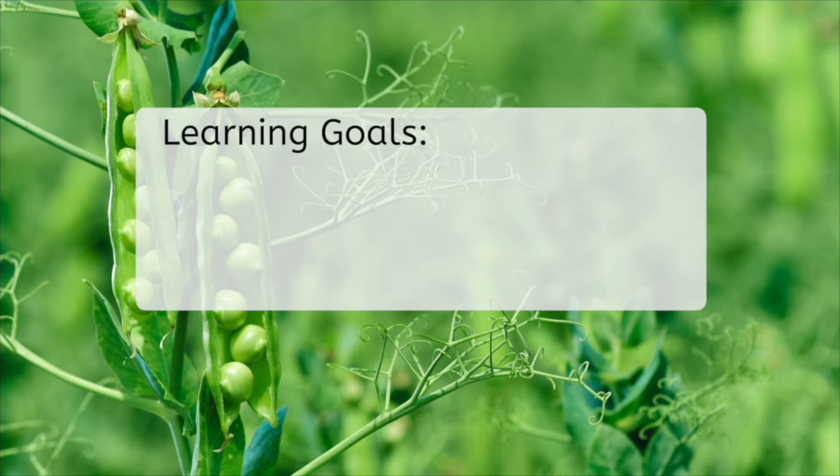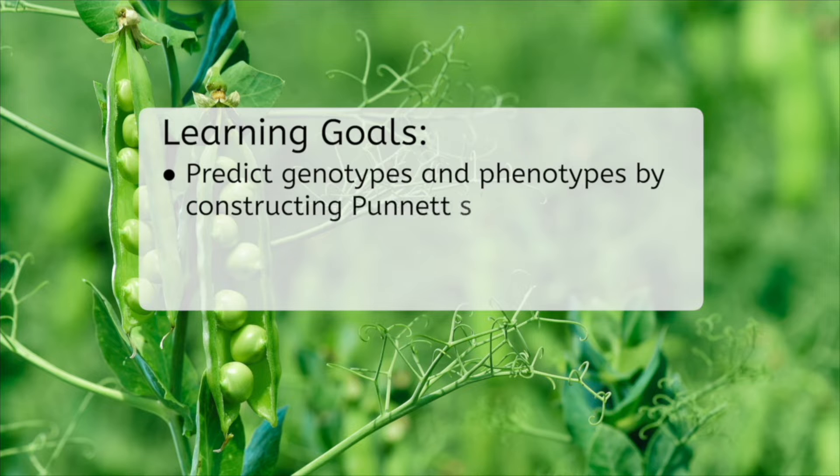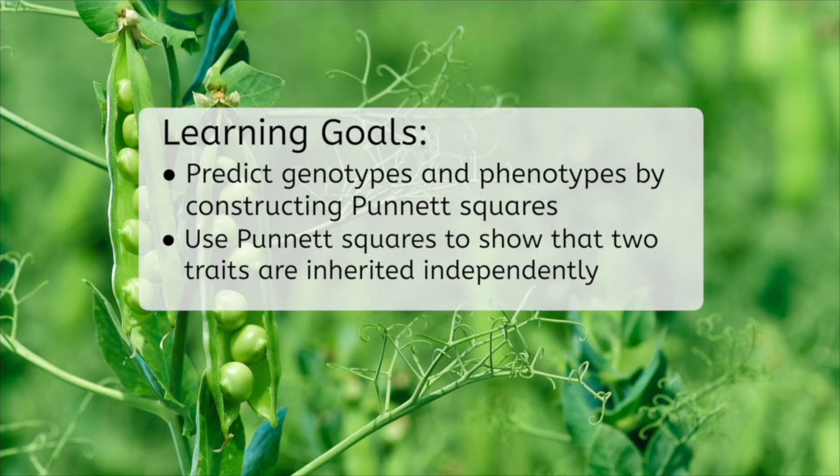A Punnett square will help us predict those four combinations and determine the probability of each combination happening. Before we get started, let's look at our goals for this lesson. By the end, you'll be able to predict genotypes and phenotypes by constructing Punnett squares, and use Punnett squares to show that two traits are inherited independently.